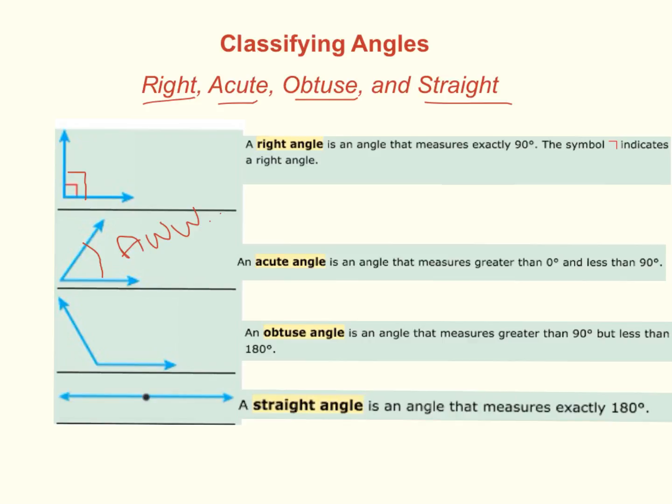And lastly, we've got a straight angle, which, you can probably guess, is pretty much a straight line. But it's important to note that the vertex is in the middle. If the vertex wasn't in the middle, and was on the end, well, that's just a ray. An angle must have two rays.